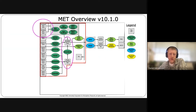This is just the MET wire diagram or roadmap. I've added these magenta or pink oval and circle to indicate that in some manner you need to arrive at gridded data before you use the Mode Time Domain tool or MODE tool, since they work on two-dimensional gridded data sets.